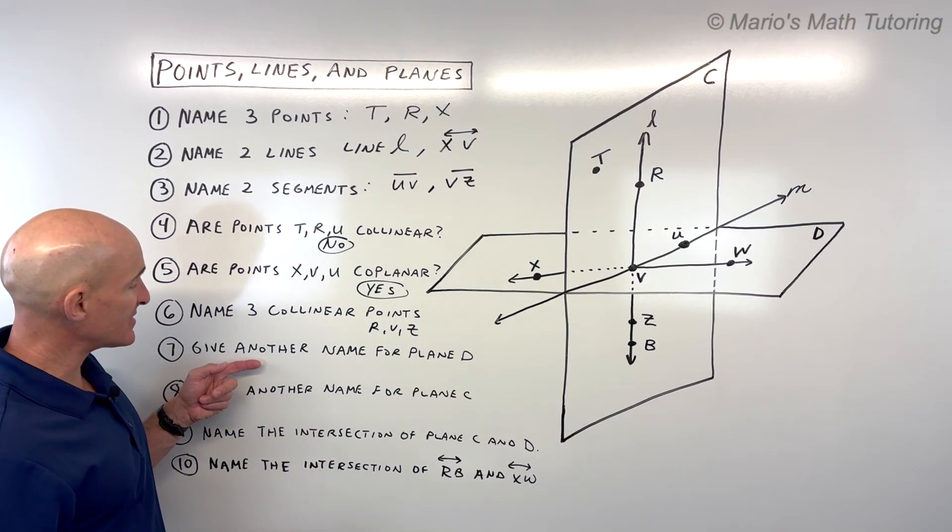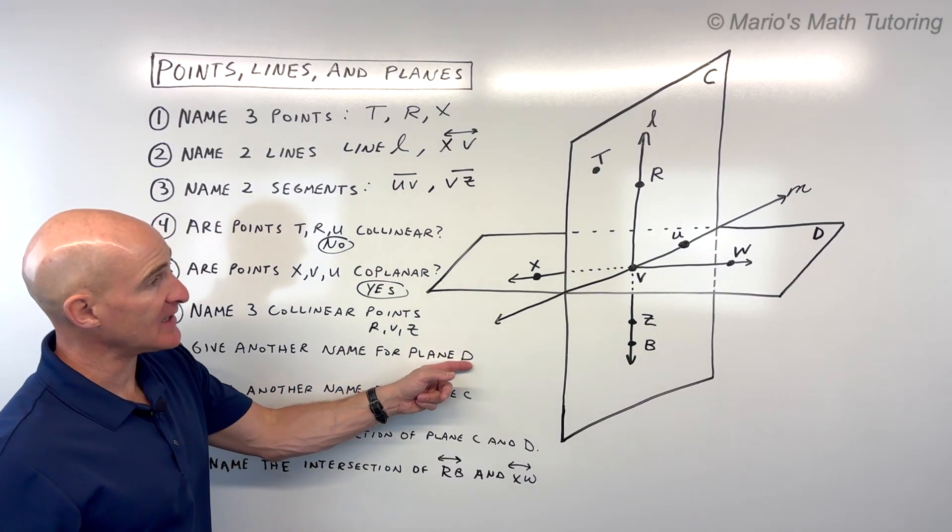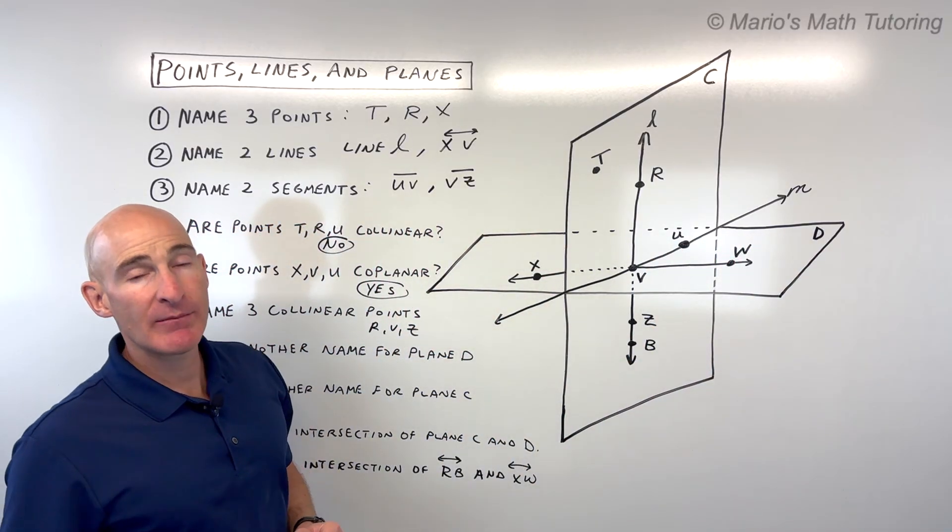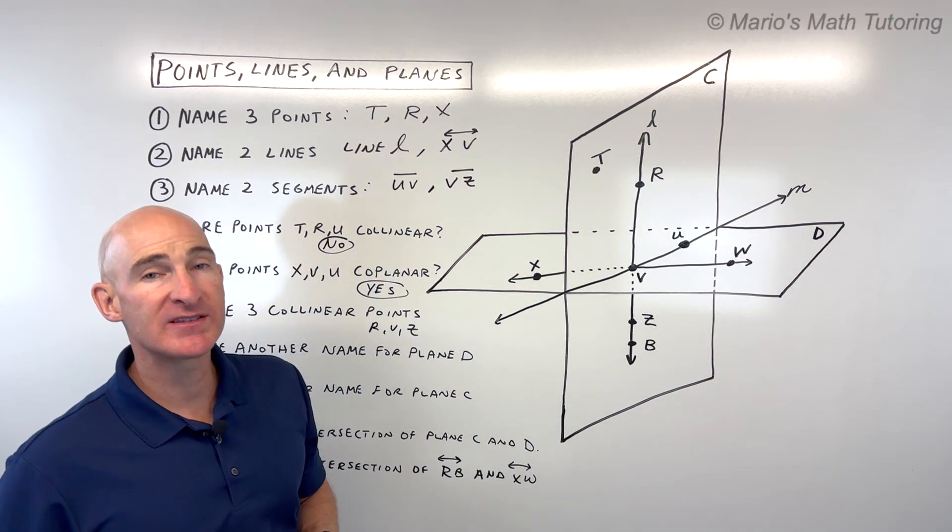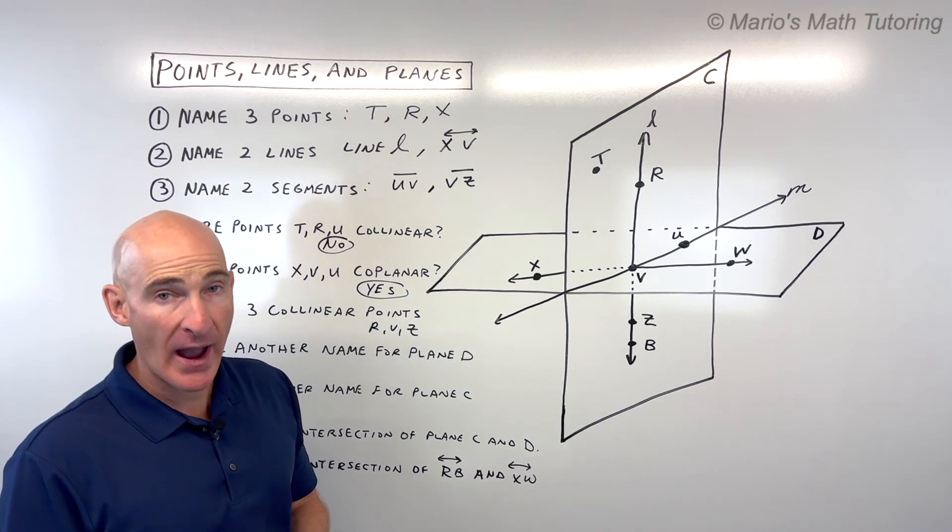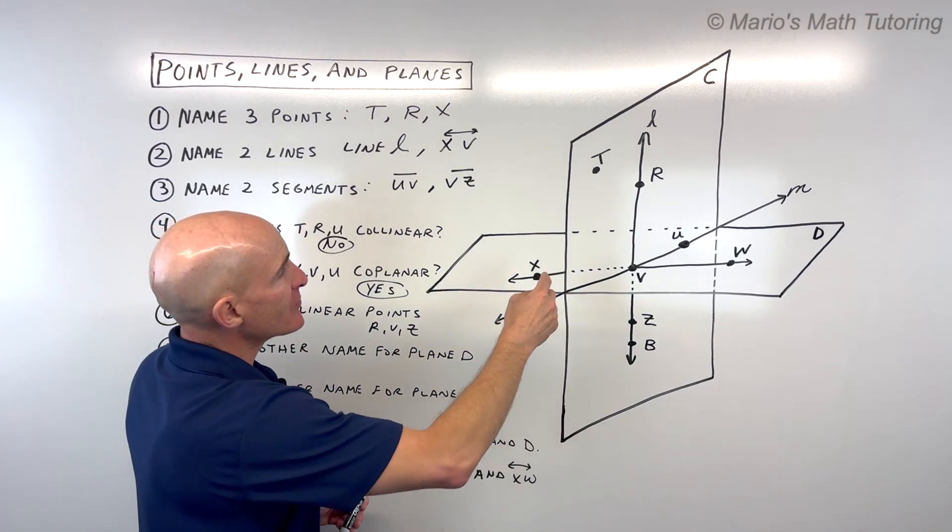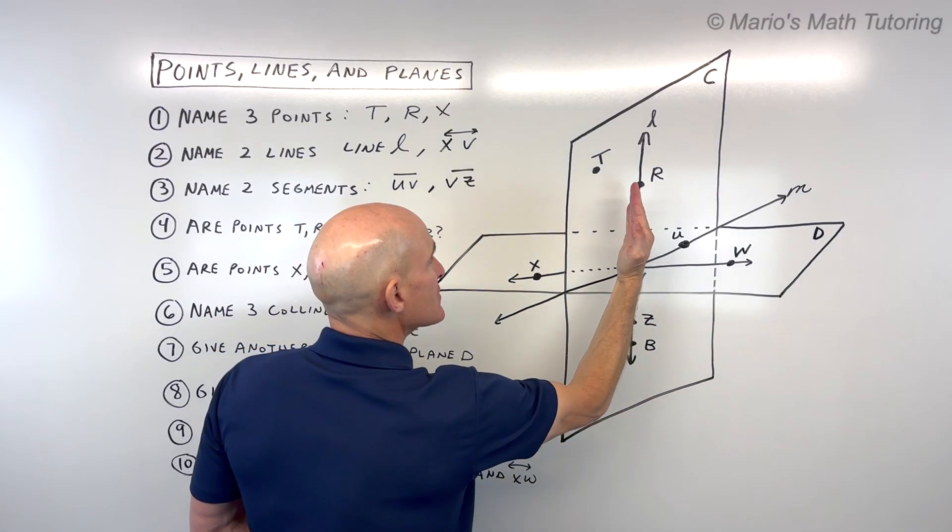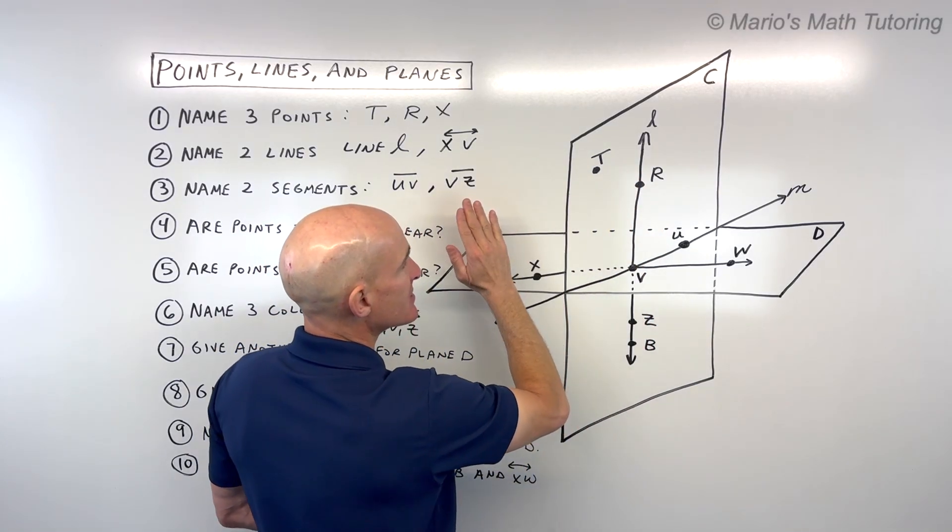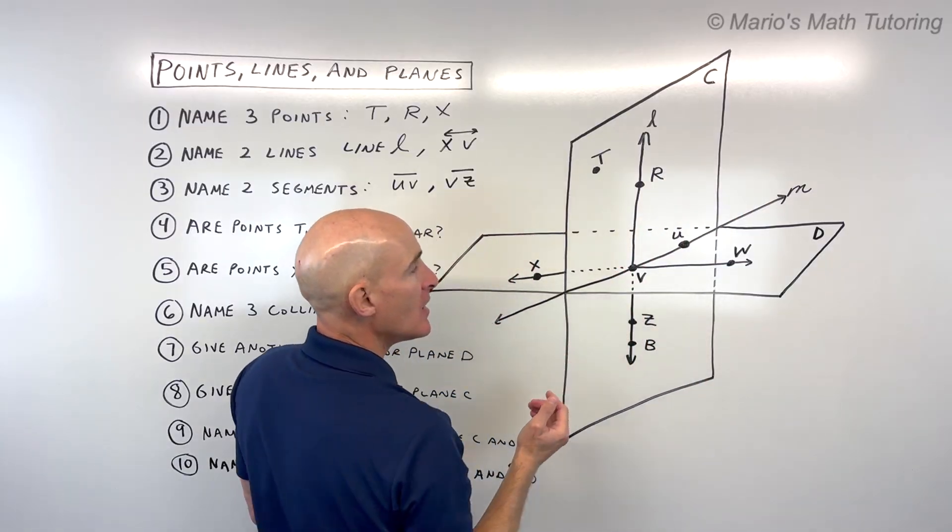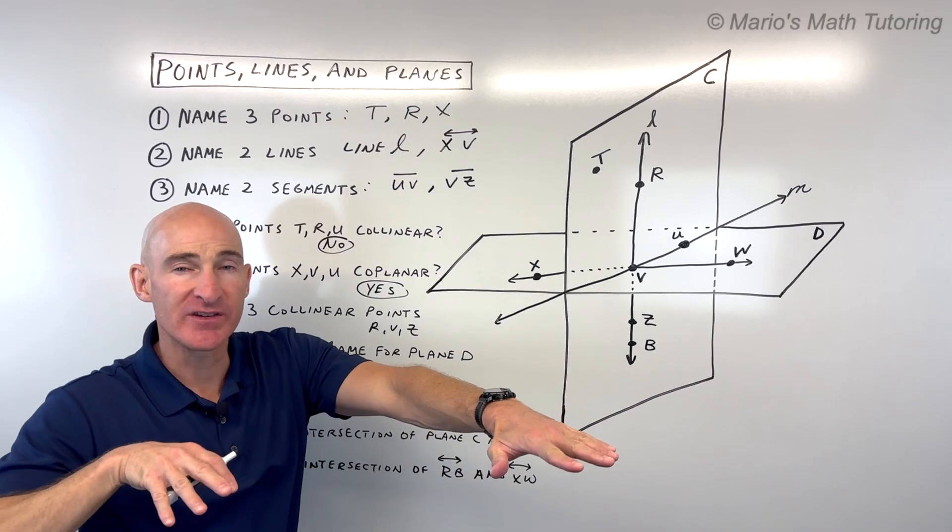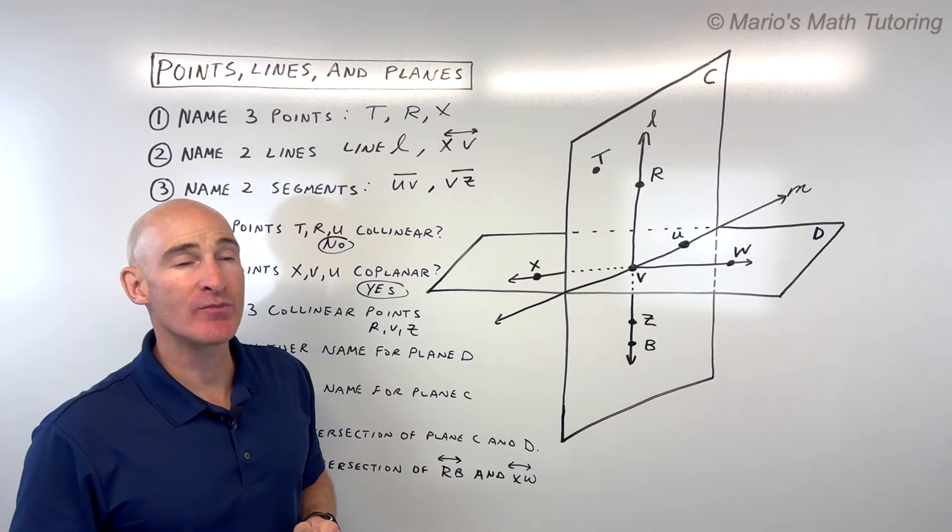For number seven, it says give another name for plane D. Plane D is this flat surface right here. The key when you name a plane is you want to pick three points that are not in a straight line. Why not in a straight line? Because if they're in a straight line, there could be a flat surface that goes through these three points on different angles.